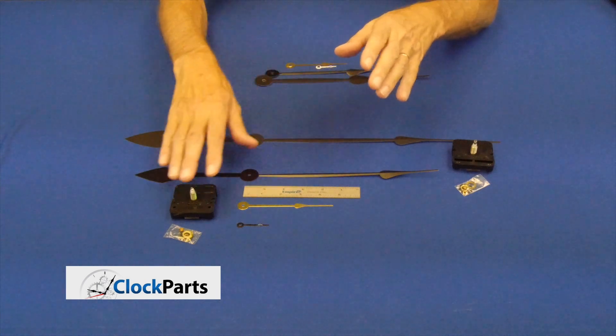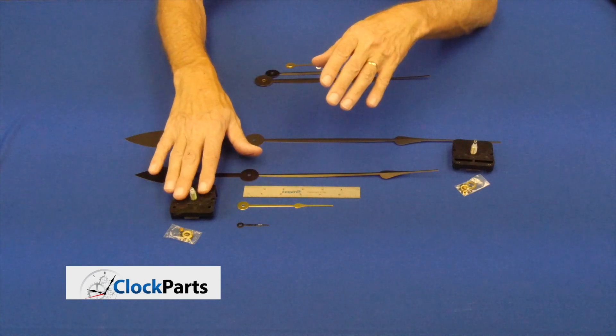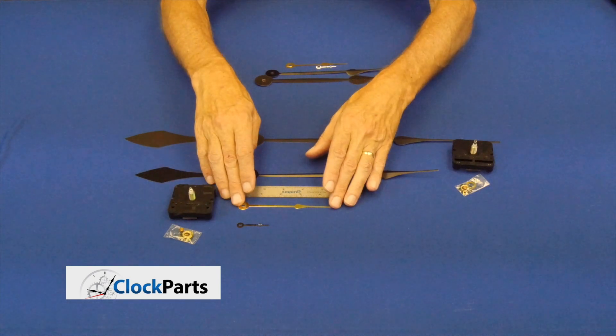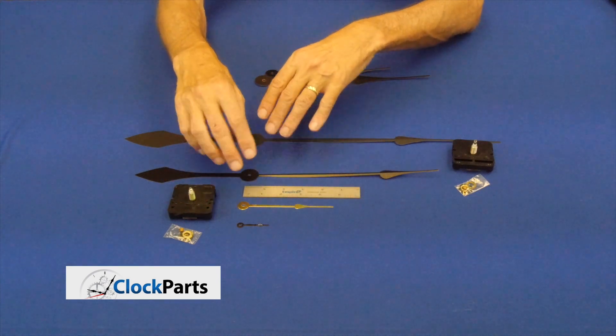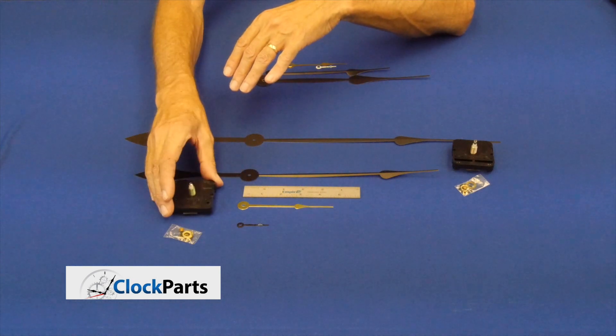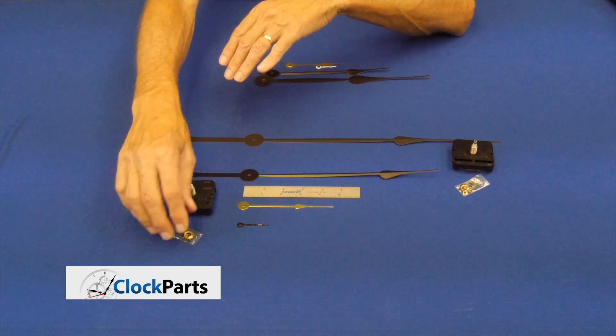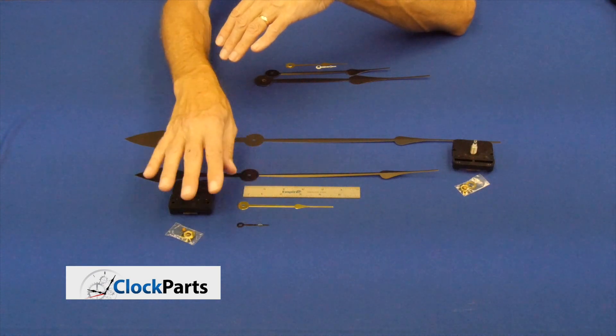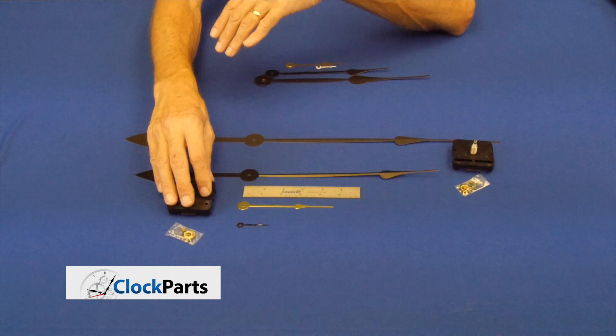So when you get a mini quartz motor and the hands are five inches or less, we're going to give you a free set of hands. So you don't even have to worry about that. When you order a mini quartz motor from us, you get the hardware and you'll be asked to select a pair of hands for your clock repair or the clock you're building.